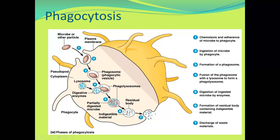Some parts of the pathogen can't be digested, and that leads to the formation of a residual body. The residual body — the indigestible material — is then excreted out of the phagocyte through the process called exocytosis.